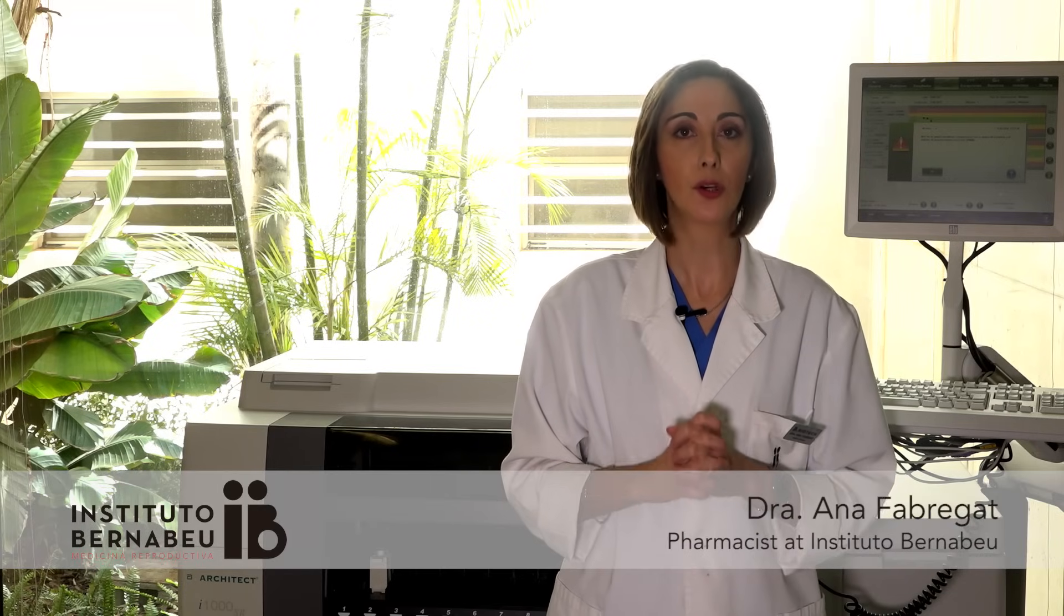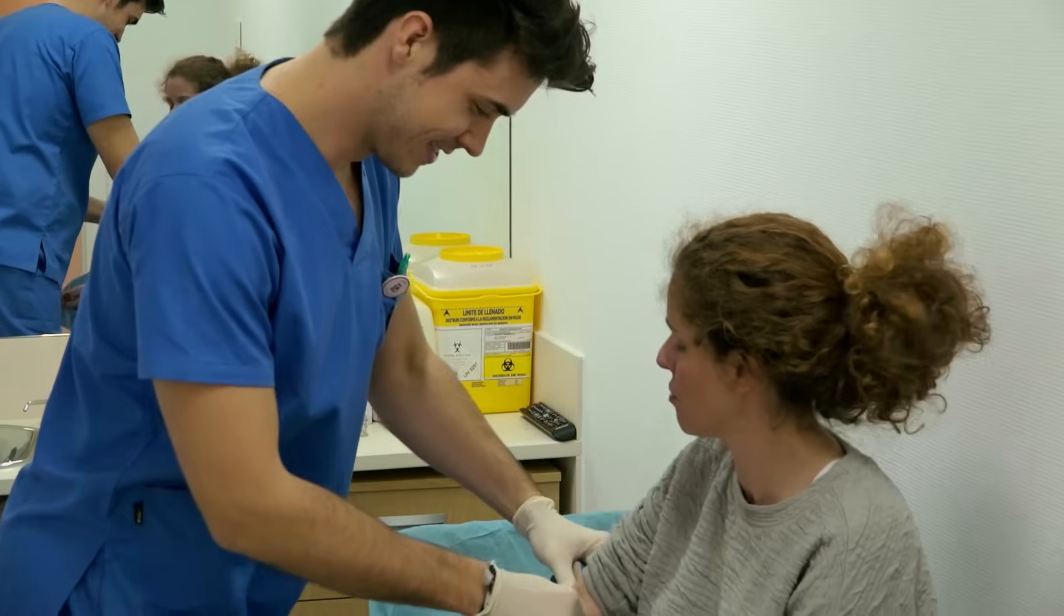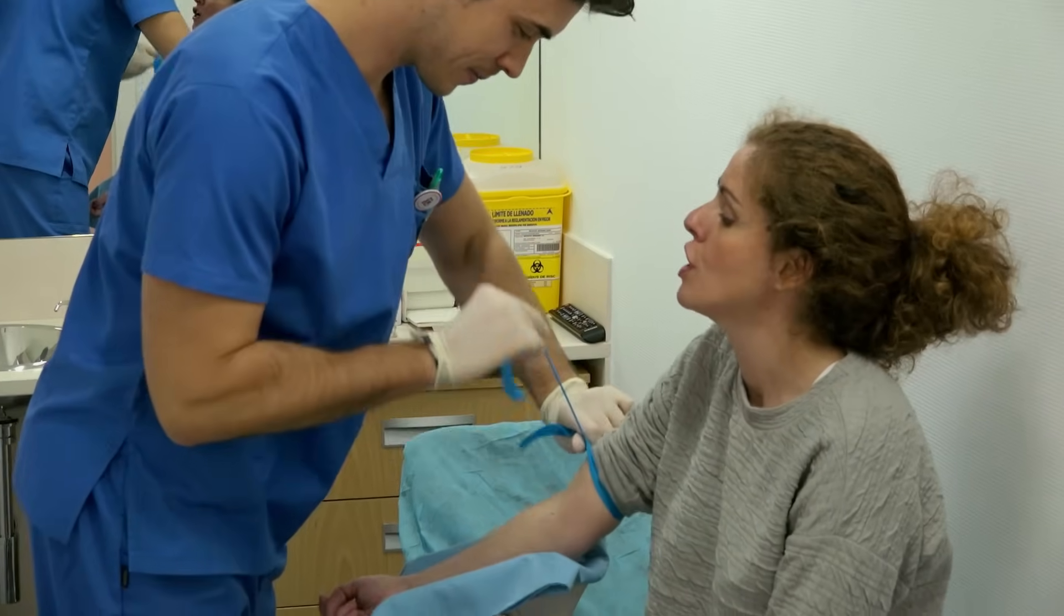Beta-HCG is a glycoprotein that is initially secreted by trophoblast cells in the embryo shortly after it implants in the uterus. Tests to detect the presence of this hormone are carried out in order to determine early on if pregnancy has been achieved and to ensure suitable follow-up procedures.